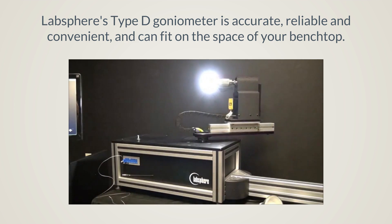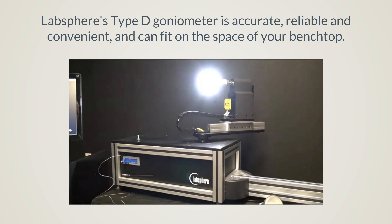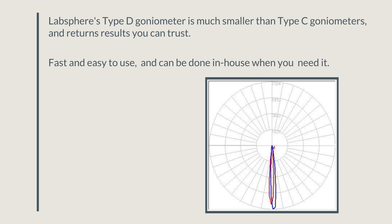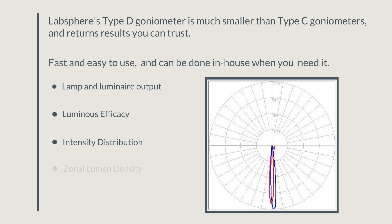The Type-D uses the same coordinate system as the Type-C, but it's much smaller. Unlike other Type-D goniophotometers, Labsphere's Type-D fits in the space of a benchtop, providing standard measurement metrics in IES.NET formats for detailed analysis and reporting.